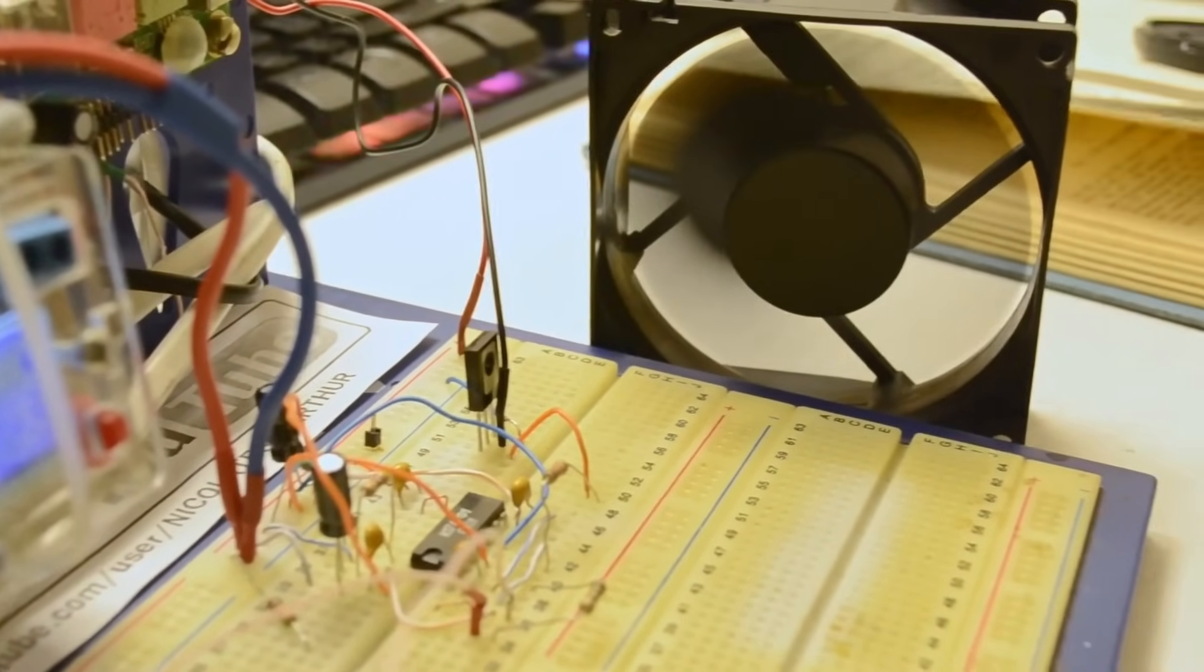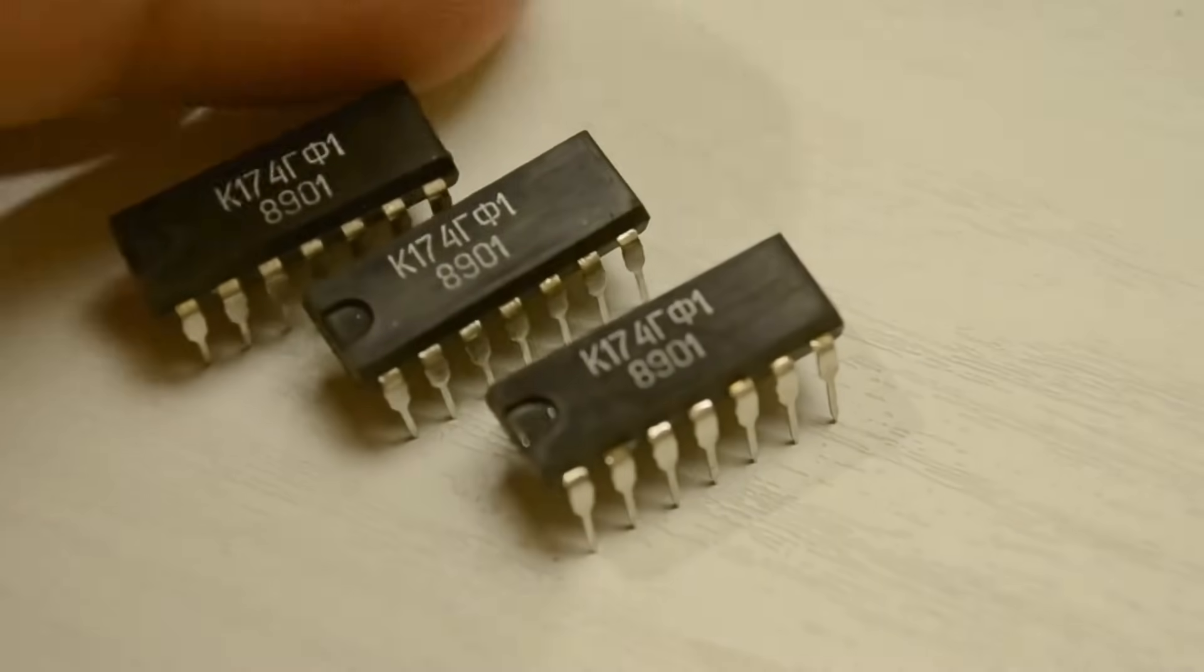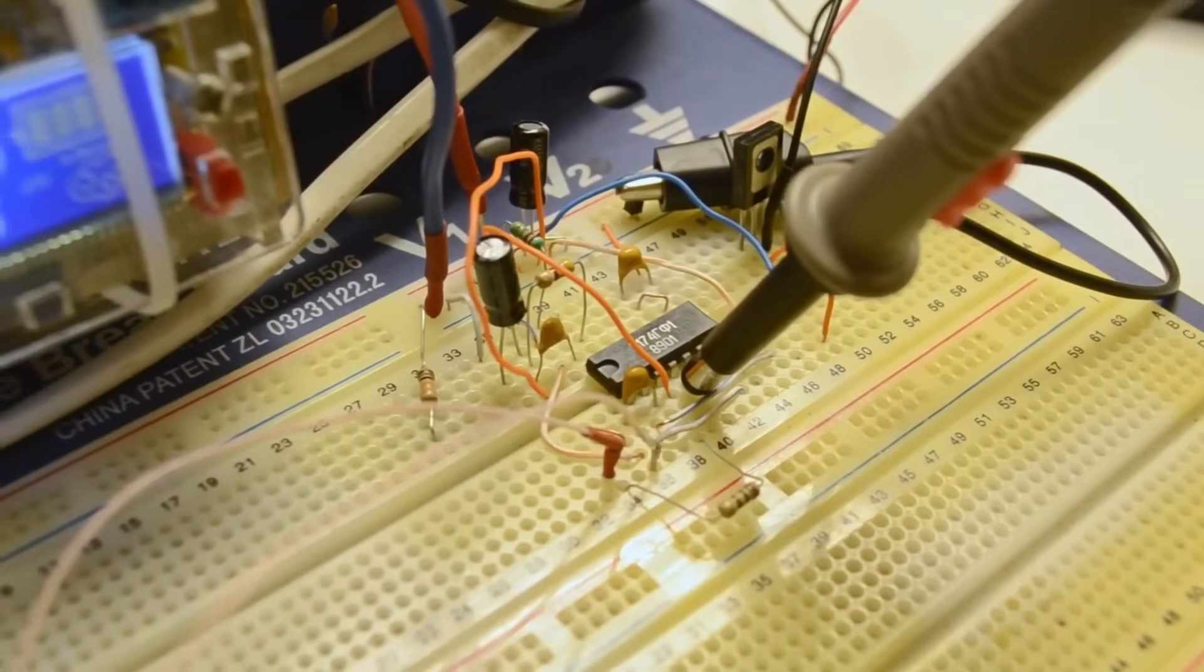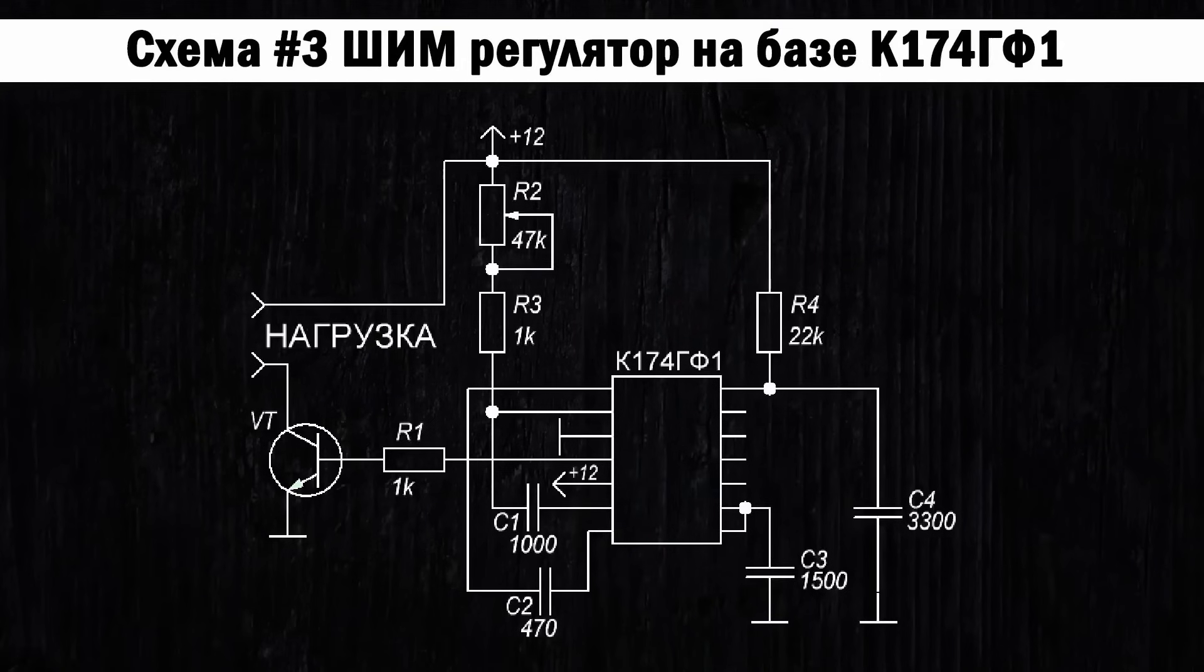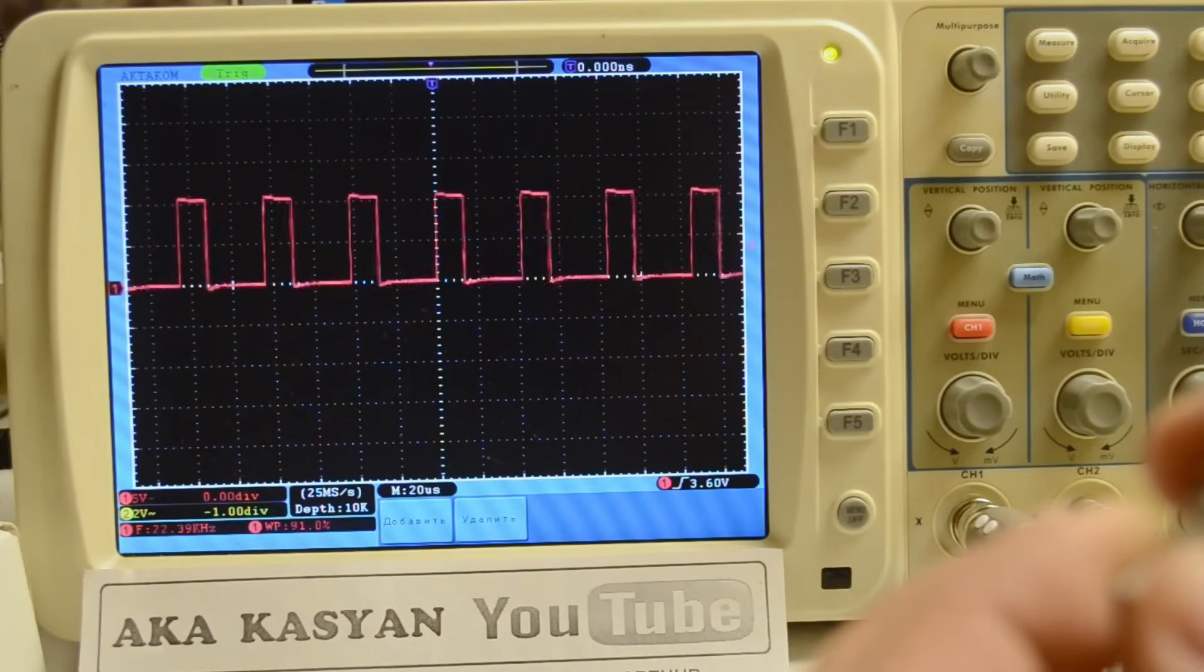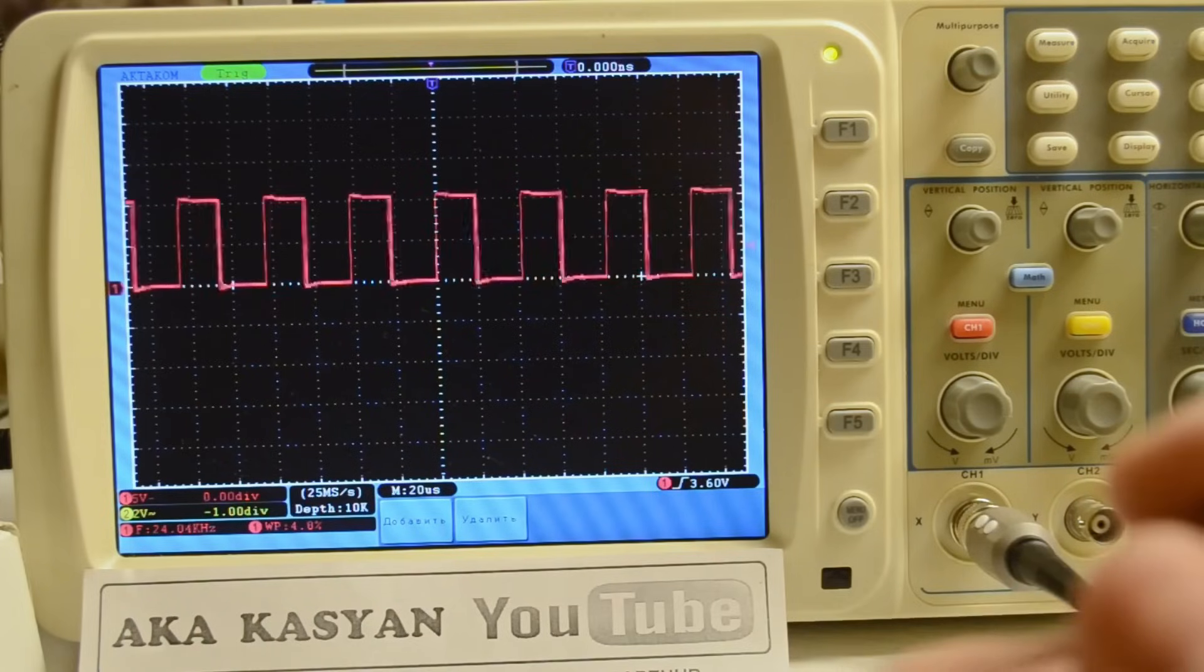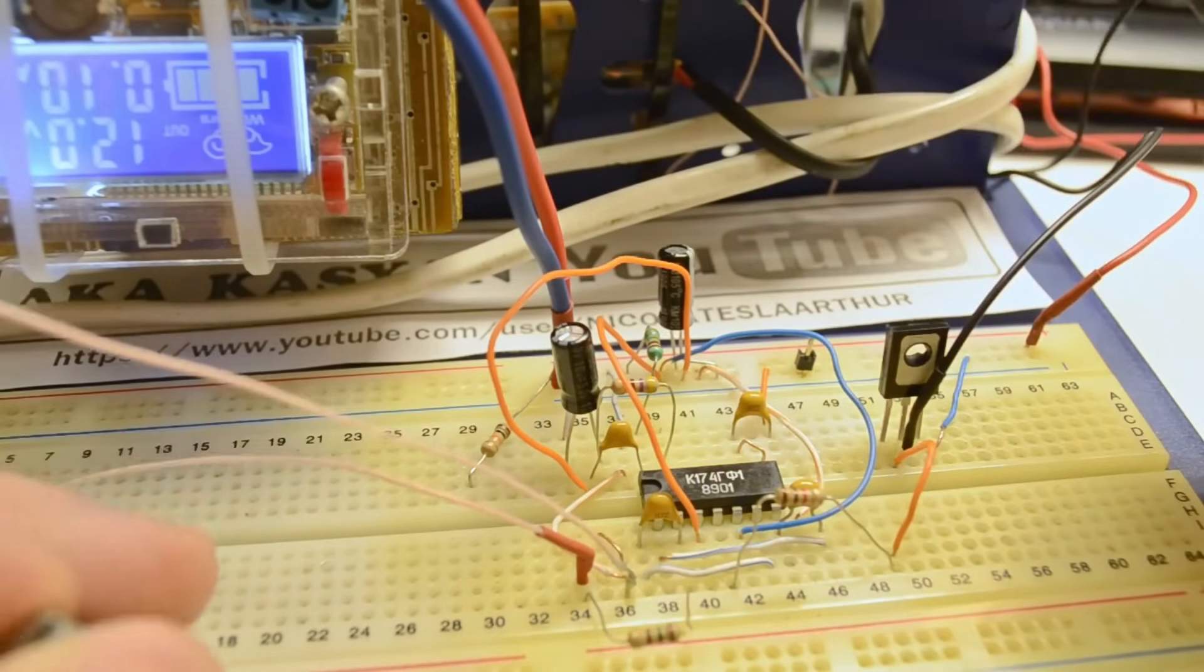And the third circuit will be one built on the K174GF1 chip. This chip is a lineskin generator powered by 12 volts. It is very sensitive to overloads, overheating, and static discharge. However, by assembling a simple board according to the following scheme, you can achieve a fairly stable PWM signal. The load resistance should be more than 500 ohms. Personal advice: If you find such a chip and decide to replicate the circuit, use a socket and keep the chips wrapped in foil until the last moment.